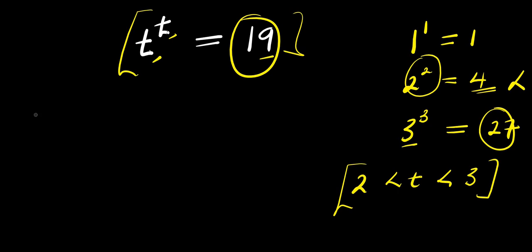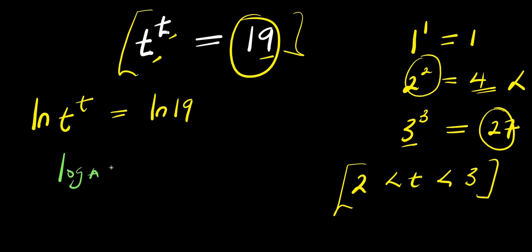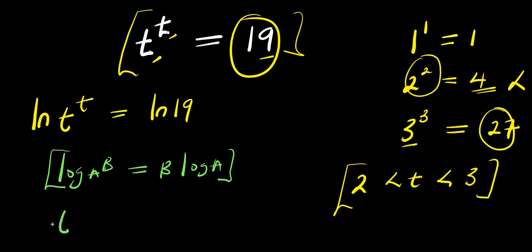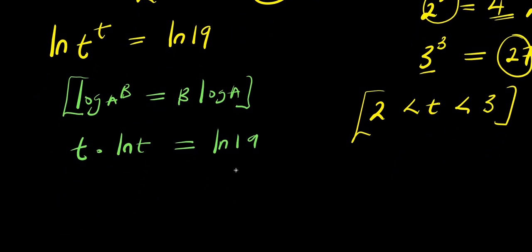I can start by making use of natural log. I have the natural log of t to the power of t equals natural log of 19. Now we apply the logarithm property: if you have log of a to the power of b, this equals b times log a. So natural log of t to the power of t will simply give us t times natural log of t, and this equals natural log of 19. So t times ln t equals ln 19.